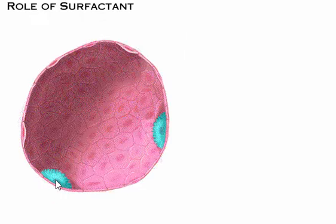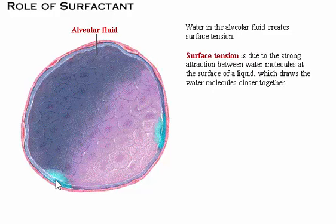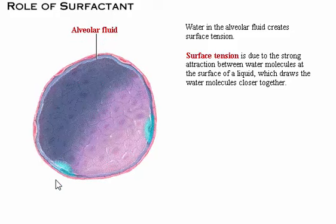The inside surface of the alveolus is lined with alveolar fluid. The water in the fluid creates a surface tension, due to the strong attraction between water molecules at the surface of a liquid, which draws the water molecules closer together. This force pulls the alveolus inward and reduces its size. If an alveolus were lined with pure water, it would collapse.